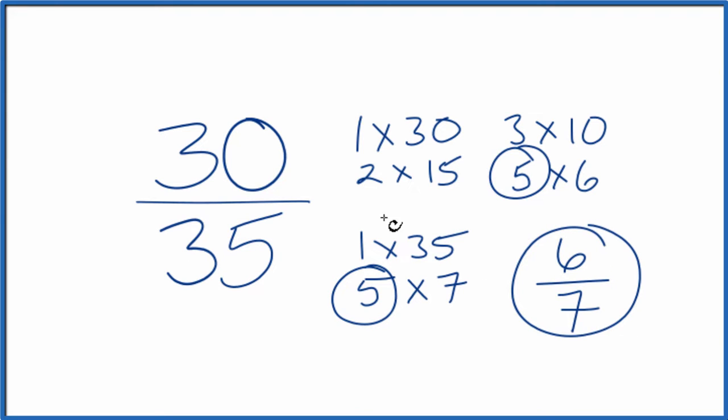So the fraction 30/35, that's equivalent to 6 over 7. We've simplified this to lowest terms.